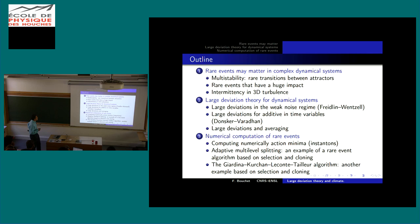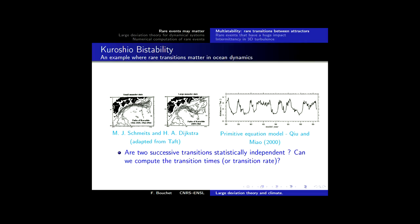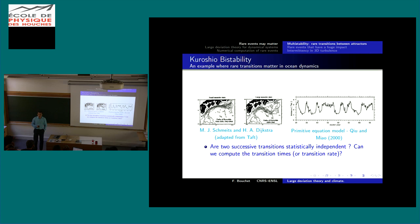I begin with a short introduction, part of which you have already seen. Large deviation theory aims to compute the probability of events in asymptotic limits, and it is often related to rare events. There are different cases in turbulent flow where rare events may be important, and there are mainly two families of examples.